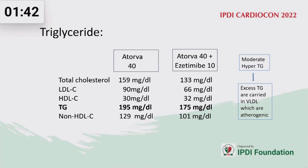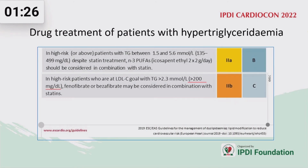Proceeding to triglyceride management: this patient had an initial triglyceride level of 195, and later it was 176, so hypertriglyceridemia is also a factor — as the previous speaker mentioned. According to guidelines, in the TG range of 135–499 mg/dL, we can give icosapentaenoic acid (EPA). If TG is 200 mg/dL or more, we can add fenofibrate, though the evidence for fenofibrate is inferior.